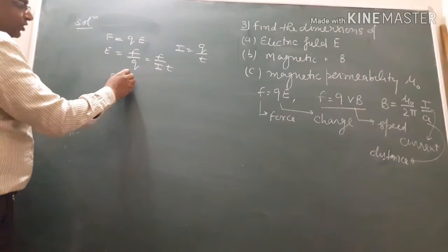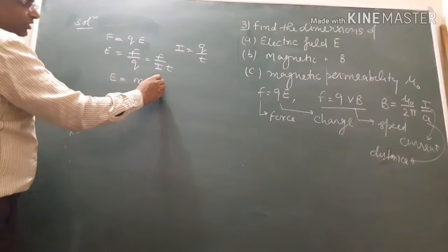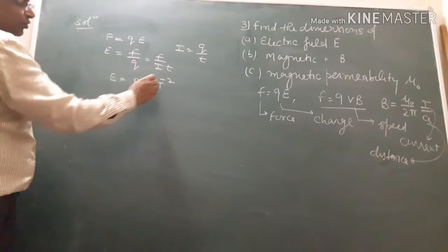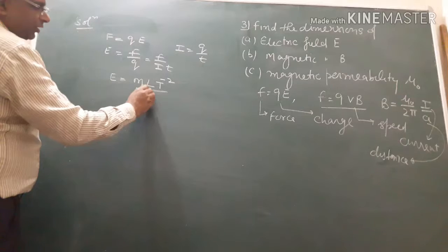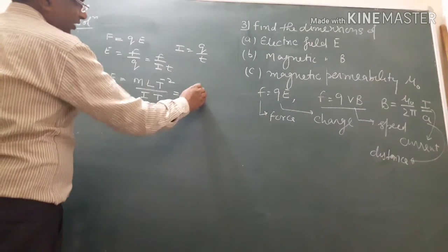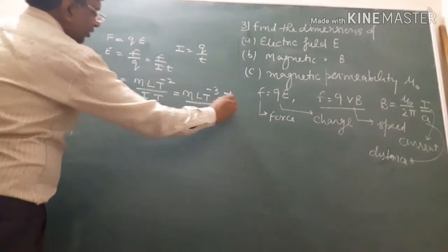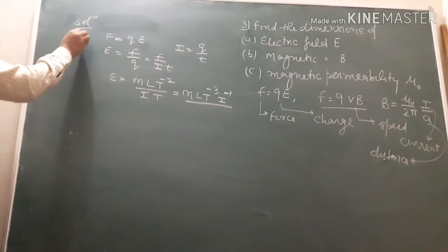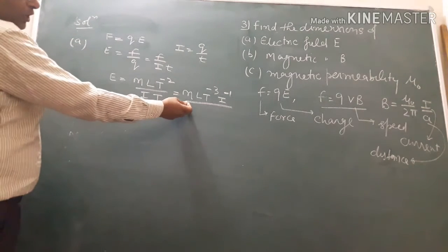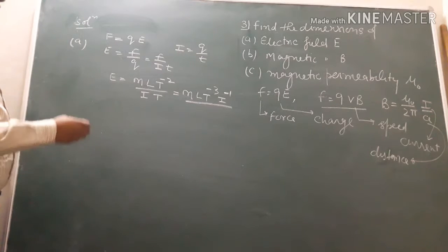The dimension of electrical field: force is mass into acceleration, which will be M L T minus 2. I T will be the charge. So M L T minus 3 I T minus 1 is our formula. The answer is M1 L1 T minus 3 I minus 1.